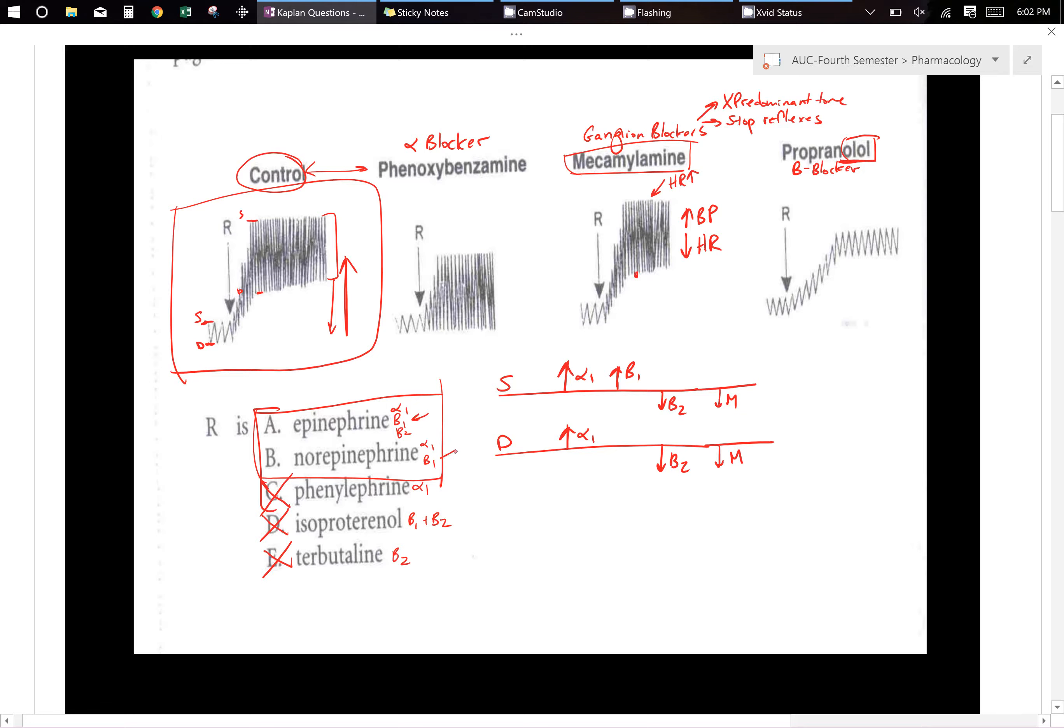Well, beta 1 and alpha 1 both increase heart rate. So now, you confirm that it has some sort of alpha 1. You confirm that it has some sort of beta 1.